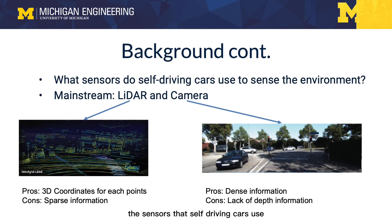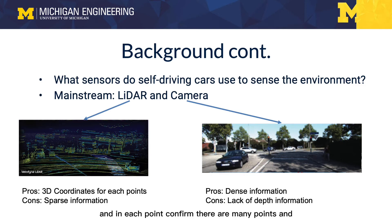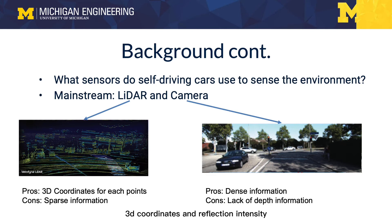The sensors that self-driving cars use most frequently are LiDAR and camera. The LiDAR can obtain a point cloud of the surrounding environment. In each point cloud frame, there are many points, and for each point, it has 3D coordinates and reflection intensity.